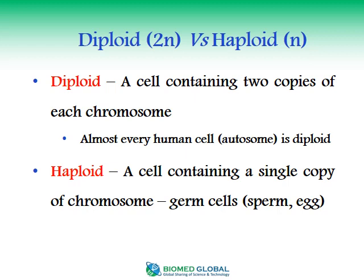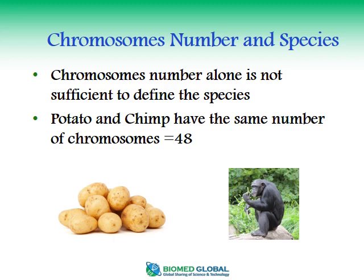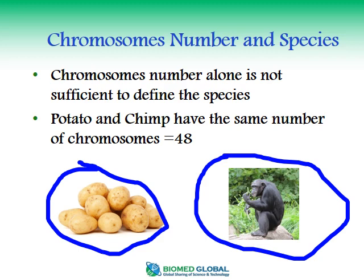Two important terms are diploid (2N) and haploid (N). A diploid cell contains two copies of each chromosome — almost every human body cell is diploid, with one copy from the mother and one from the father. A haploid cell contains a single copy of each chromosome; germ cells such as sperm and egg cells are examples. Importantly, chromosome number alone is not sufficient to define a species — for example, potato has 48 chromosomes and chimpanzees also have 48 chromosomes.